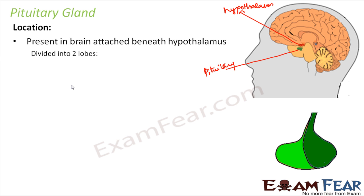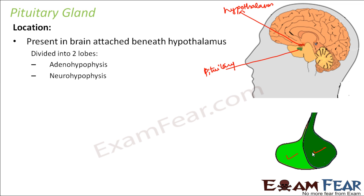Here you see the red colored structure which is the hypothalamus, and just below it the green colored structure is the pituitary. If you look at the structure of the pituitary gland, it is divided into two lobes — one and two — called adenohypophysis and neurohypophysis.